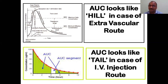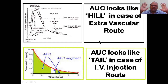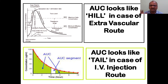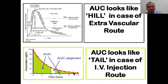Different types of AUC curves are available. For oral route or any extravascular route - oral, rectal, intranasal - the curve looks like a hill structure. If you give an IV injection, there is no absorption phase - only an elimination phase - because at time zero itself you have 100% of the drug concentration in the blood.